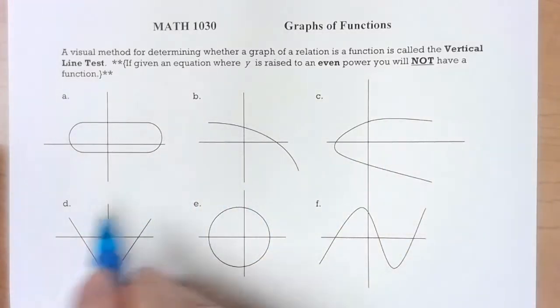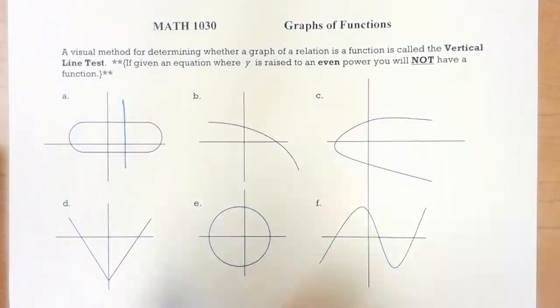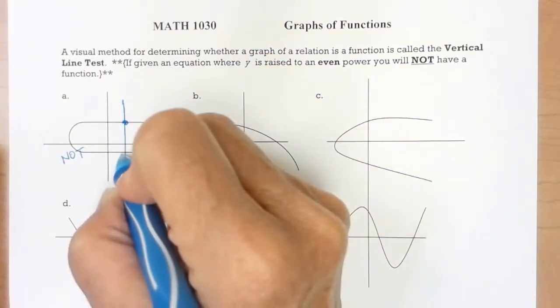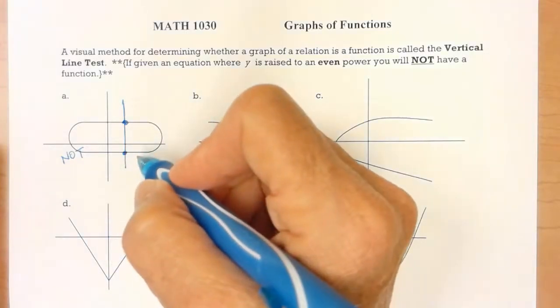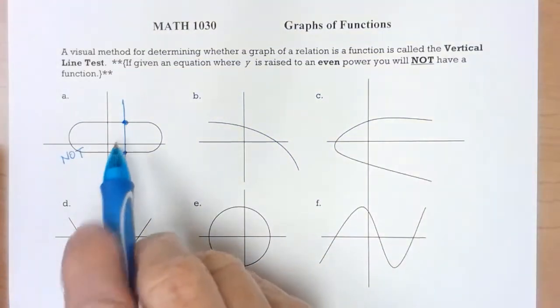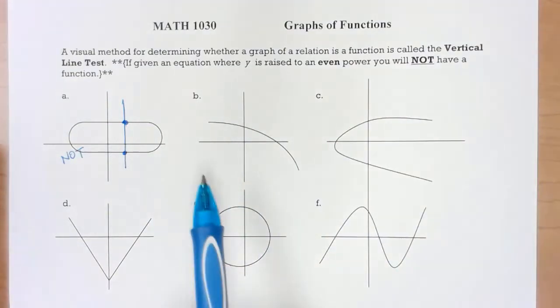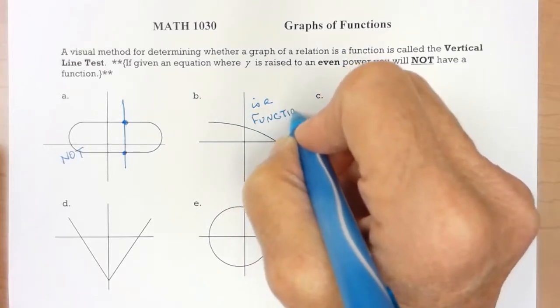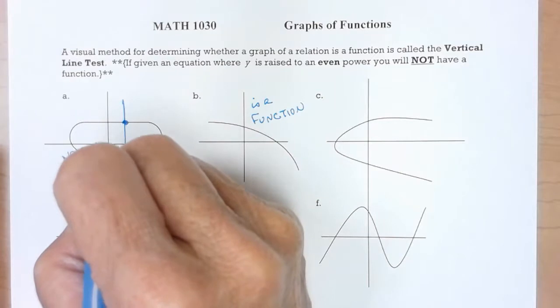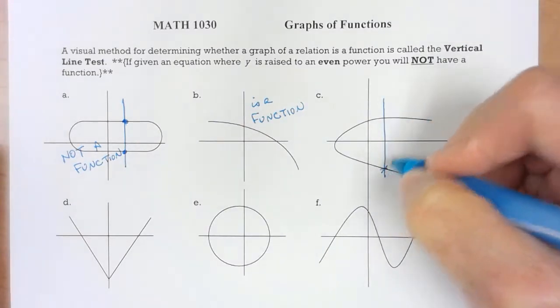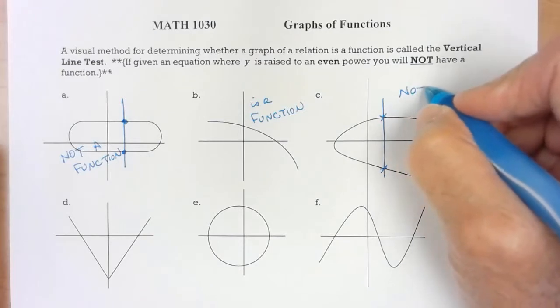So if I use a vertical line test on these graphs, that is not a function. Because remember by definition no two different ordered pairs can have the same x value. Those two points will have the same x value. So if I hit it in more than one place it is not a function. Now in B try as you will but you only can hit it in one place. So this is a function. What about C? This is not a function.